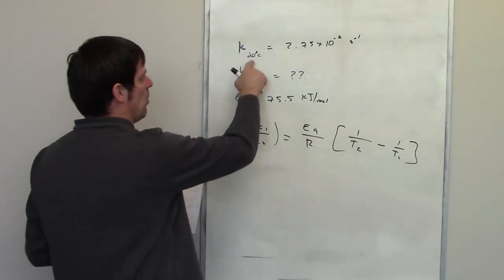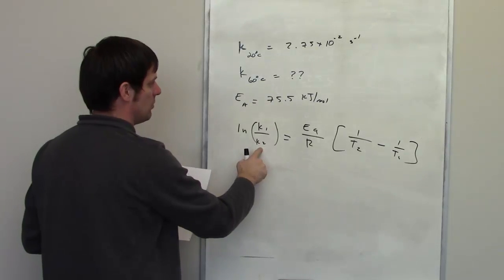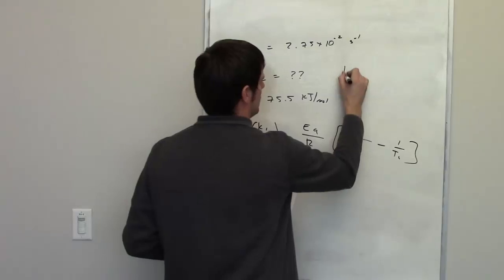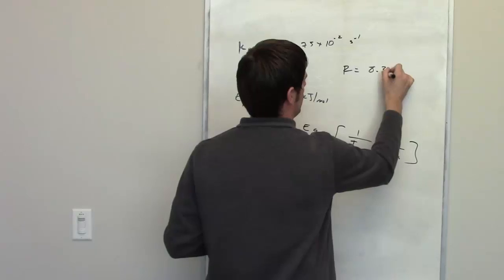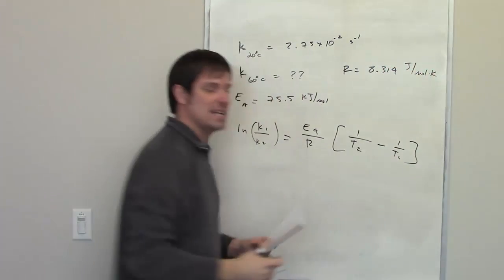So I have k1, that's 20 degrees C. k2 is what I'm trying to solve for. I also have the activation energy. The ideal gas constant for one of these kinds of reactions has to be 8.314 joules per mole kelvin.